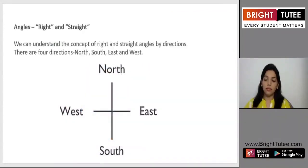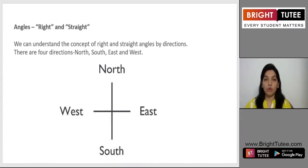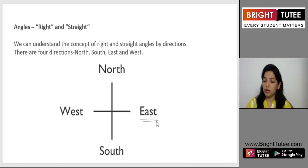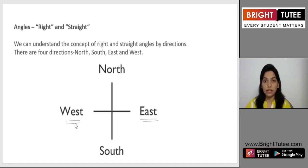Moving ahead, we will start learning about these angles with respect to directions. We have the directions of east, west, north, and south. As you can see in this image, east is on your right hand side, west is on the left side, what you face is north, and on your back is south. We can understand the concept of right and straight angles by using directions.